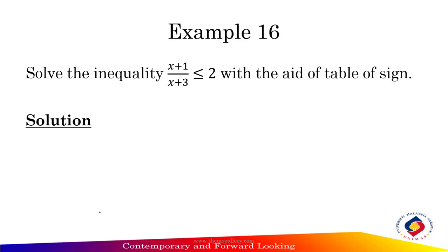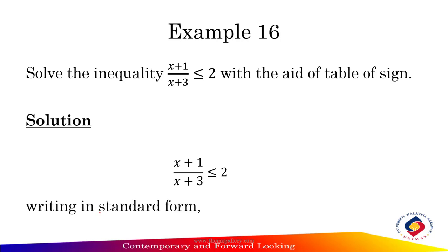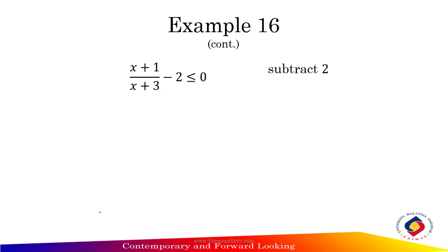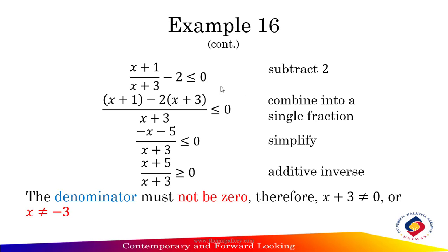Let's try example 16. Solve the inequality of x plus 1 divided by x plus 3, less than or equal to 2, using the table of sign. First, write in standard form: subtract both sides by 2 and combine into a single fraction. Equalize the denominator: x plus 1 divided by x plus 3, minus 2 divided by 1, less than or equal to 0.